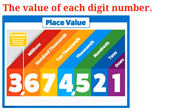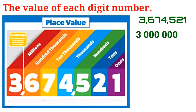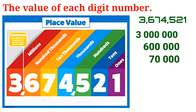Let's learn the value of each digit in 3,674,521. The value of 3 is 3,000,000. The value of 6 is 600,000. The value of 7 is 70,000. The value of 4 is 4,000. The value of 5 is 500. The value of 2 is 20. And the value of 1 is 1.